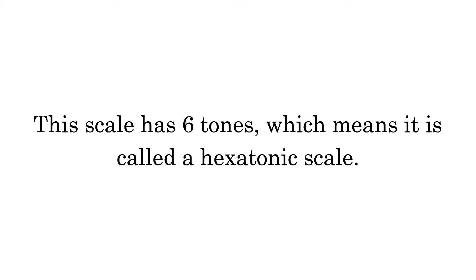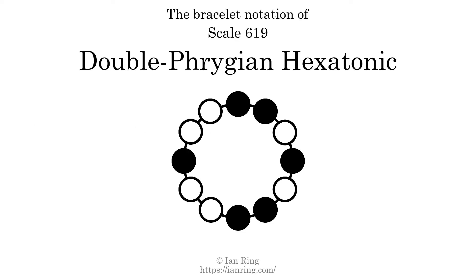This scale has six tones, which means it is called a hexatonic scale. This is a bracelet notation diagram of scale 619. The shaded circles represent tones that appear in the scale, and they are read clockwise, starting at the top.